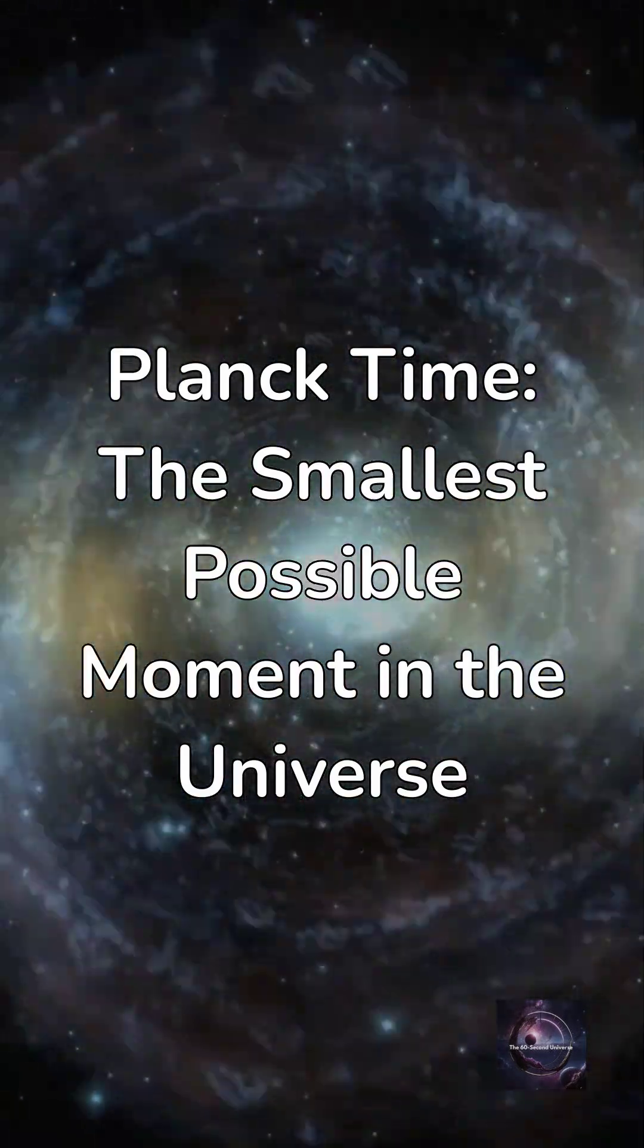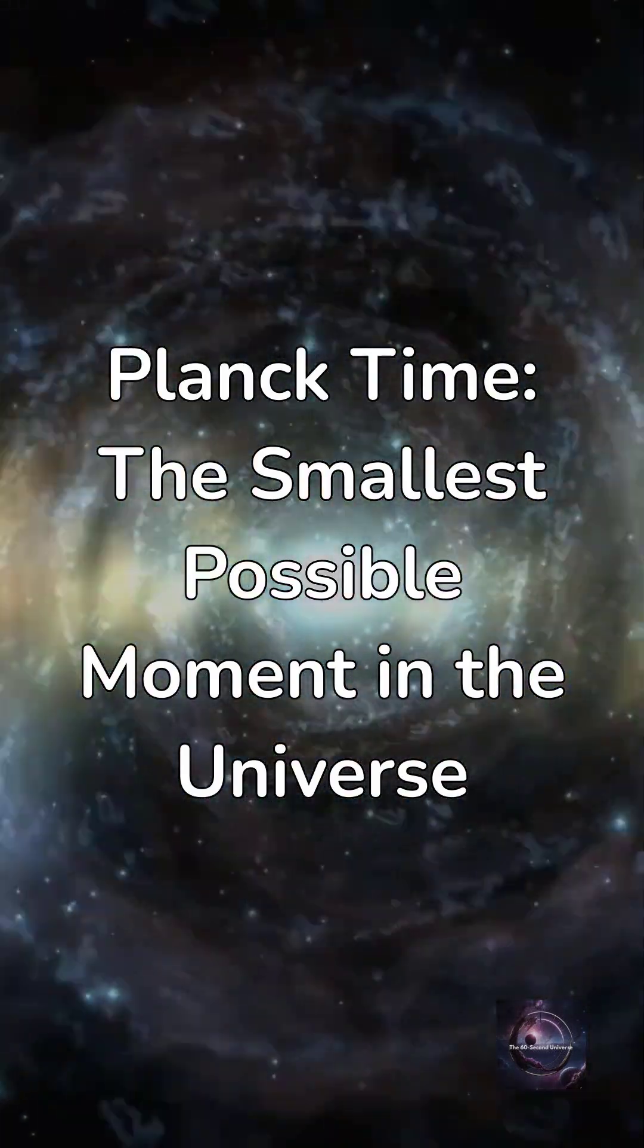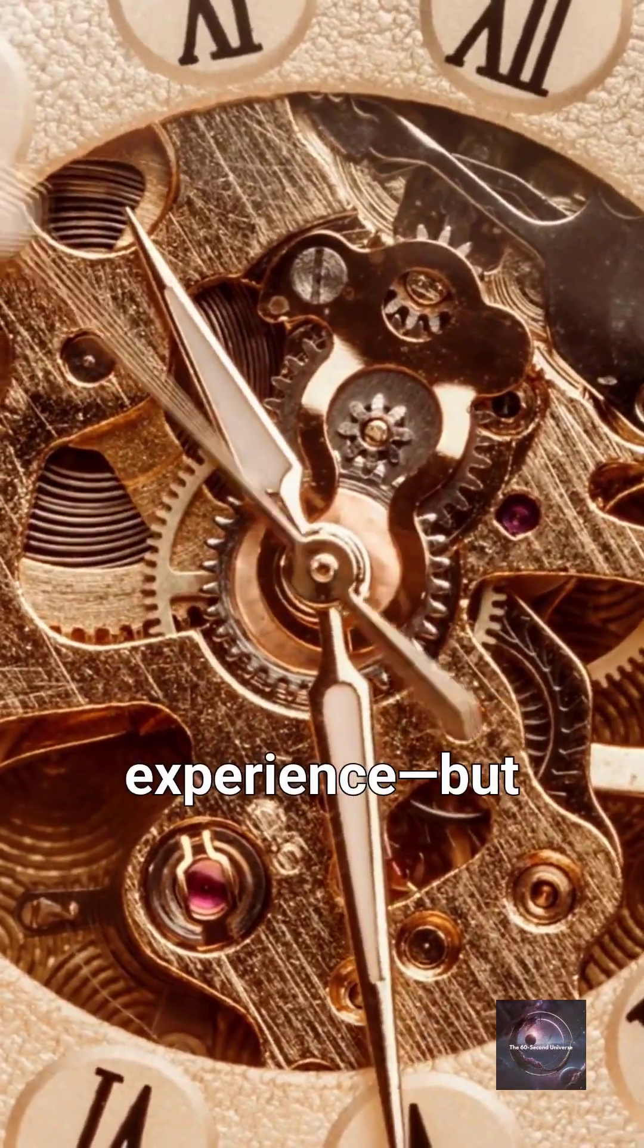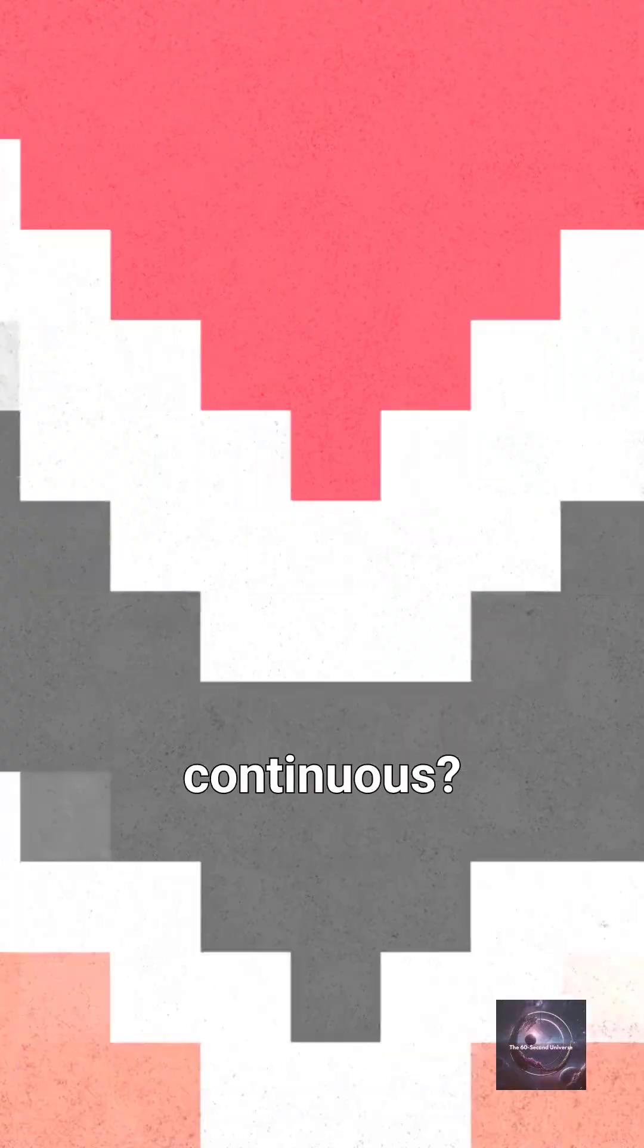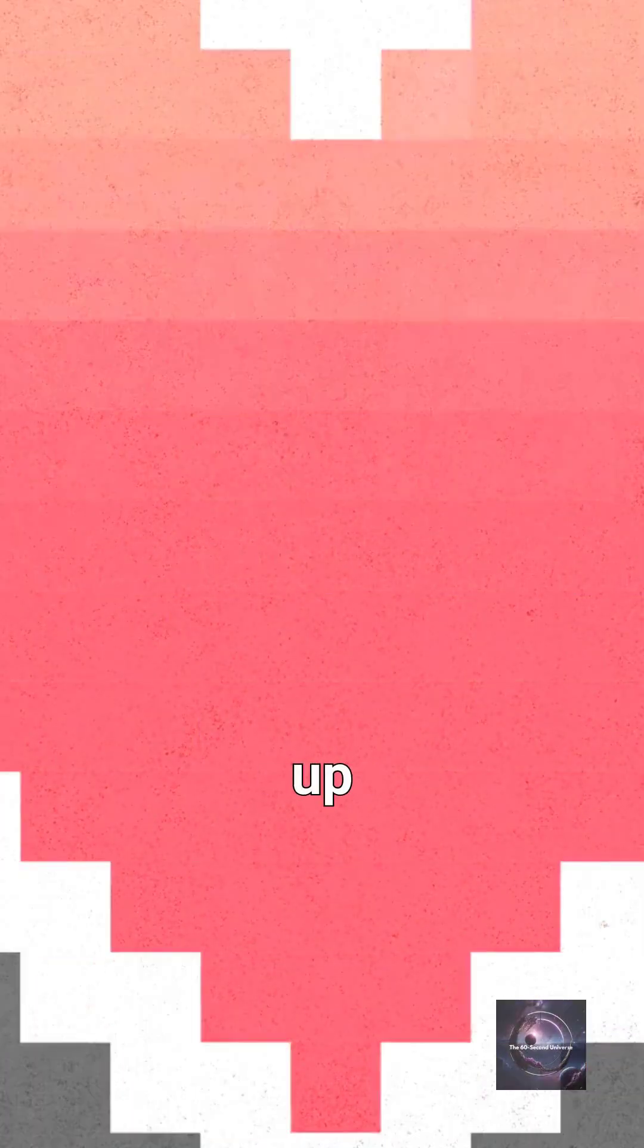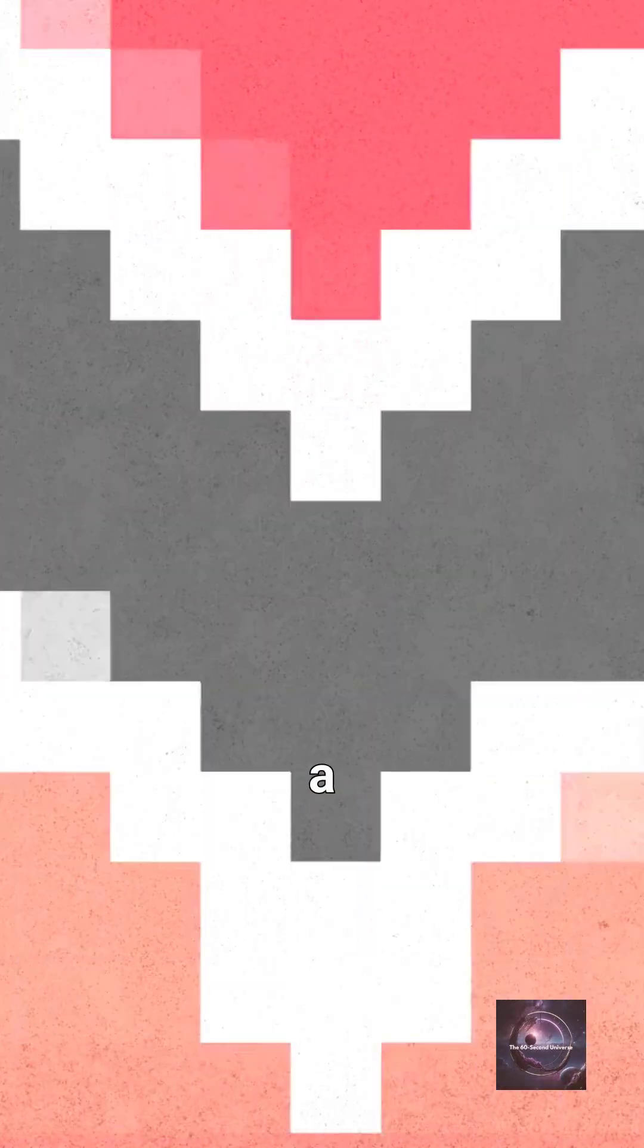Planck time, the smallest possible moment in the universe. Time is something we all experience, but what if it's not smooth and continuous? What if it's made up of tiny, indivisible moments, like pixels on a screen?